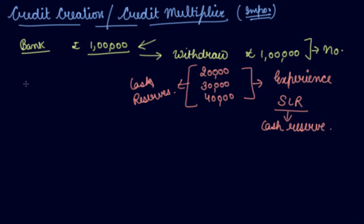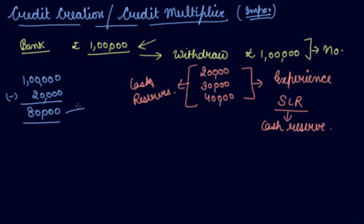If 1 lakh is deposited with the bank and from past experience the bank thinks that only 20,000 in a day will be withdrawn by people, then the bank is left with rupees 80,000. So what does the bank do? The bank can give credit of rupees 80,000 to the public.